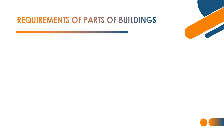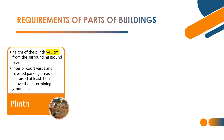Rule number 52 covers requirements of parts of buildings. First part: plinth. The height of the plinth shall not be less than 45 cm from the surrounding ground level — it should be greater than 45 cm in any case. Interior courtyards and covered parking areas shall be raised at least 15 cm above the surrounding ground level.